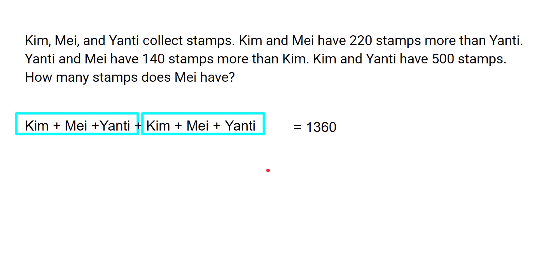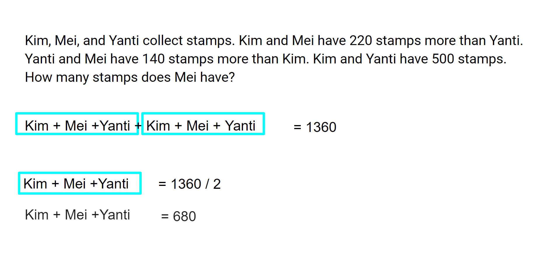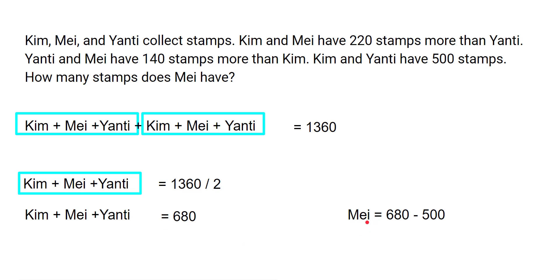We have two groups of Kim plus May plus Yanthi summing to 1360, so one group — Kim plus May plus Yanthi — equals 680. Since Kim and Yanthi have 500 stamps, May's stamps equal 680 minus 500, which gives May 180 stamps. That's the model method solution.